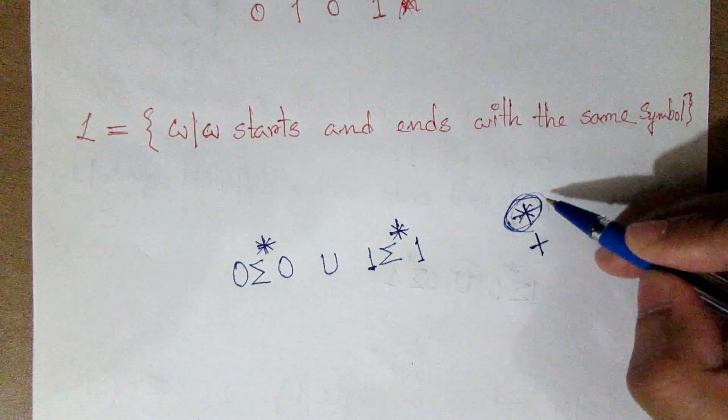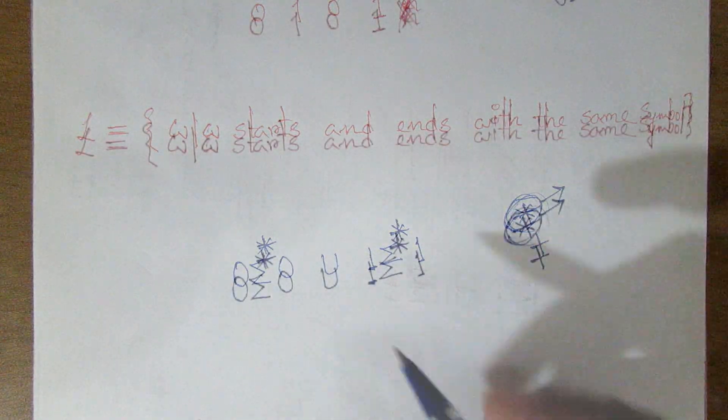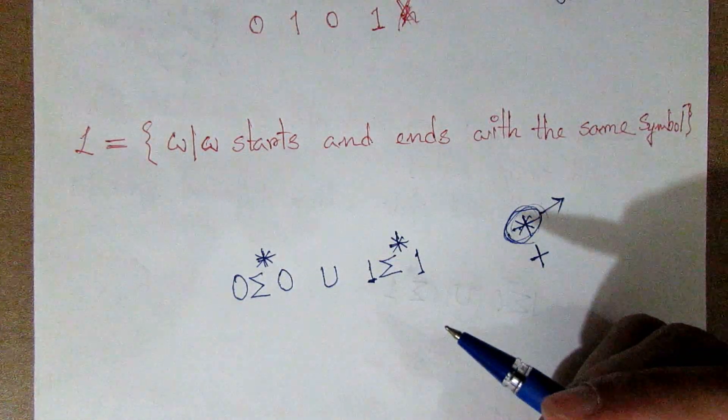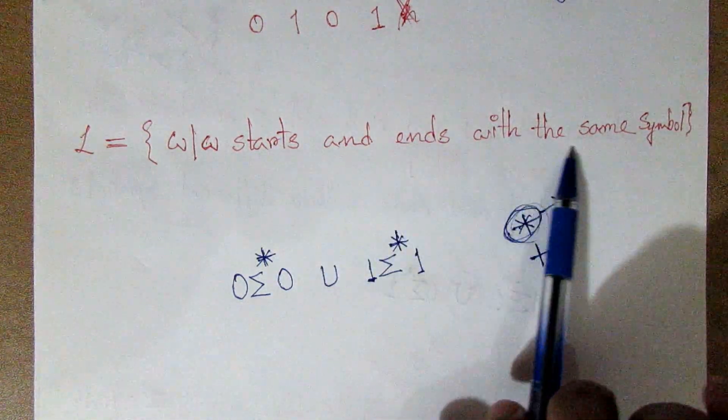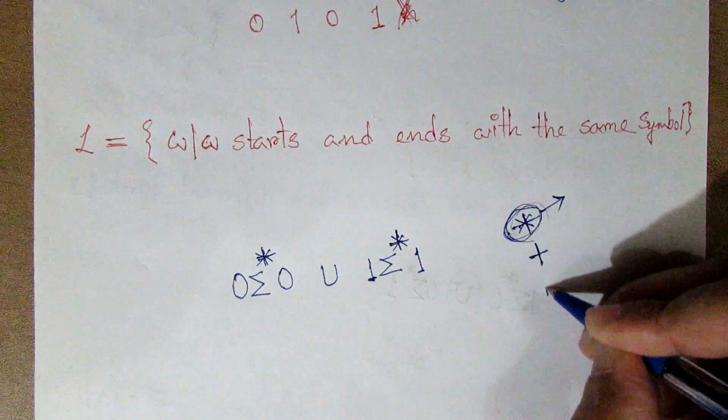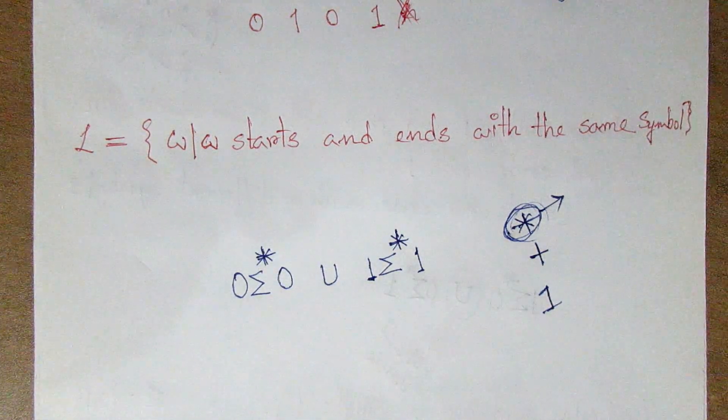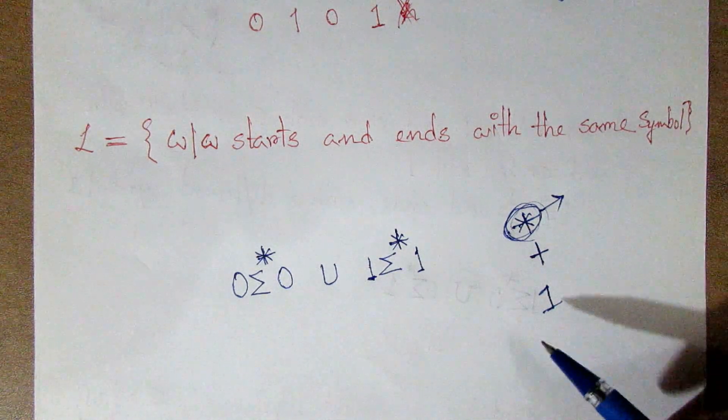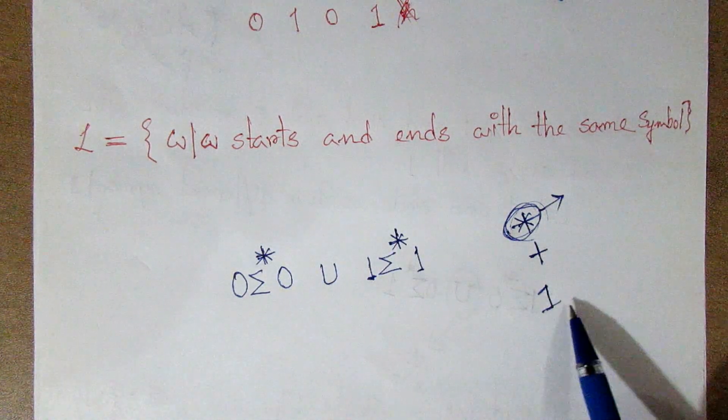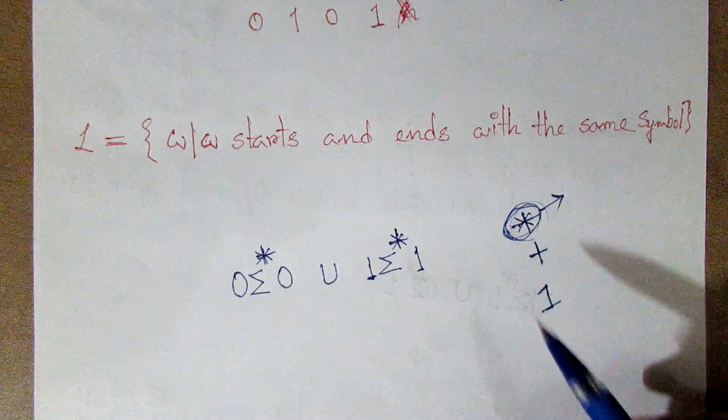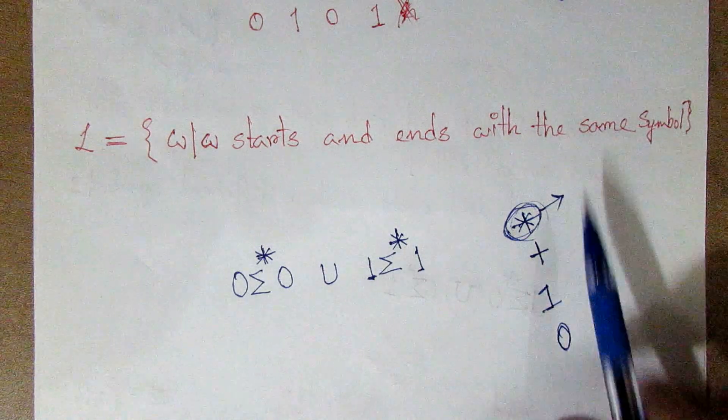So we can see here the condition is start and ends with the same symbol. If the condition is one, then we can fulfill this condition. So if the condition is one, then one is one. If the condition is zero, then zero is zero.